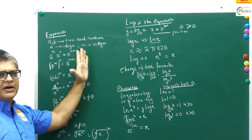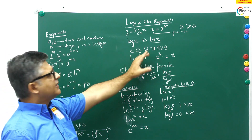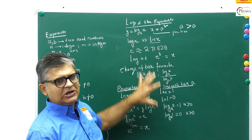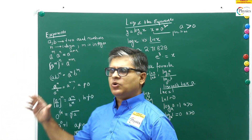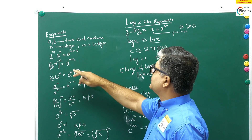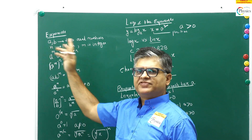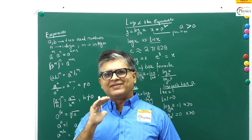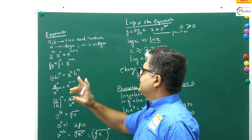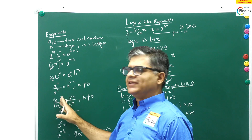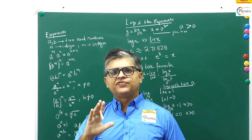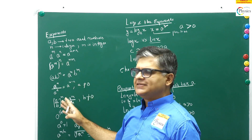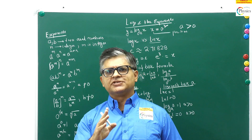I've divided the board into two parts. The first part is exponents, the second part is logs. Today's agenda is to talk less about exponents and more about logs. Let's start with some basic assumptions: a and b are two real numbers — we're not talking about complex numbers. The n and m used throughout in exponents are integers.